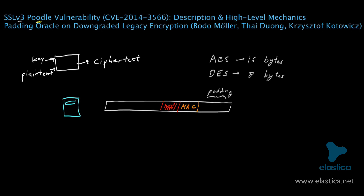The padding approach used in SSL v3 is extremely simple. It basically comprises a bunch of random byte values — I'll denote those values by x's — and then a final value that indicates the size of the padding, how many bytes were padded, which I'll denote by the letter S. This approach seems innocuous, but it actually contains a very subtle but deep flaw. The full payload, which comprises the original data, the MAC, and the padding, is then encrypted as part of SSL v3.